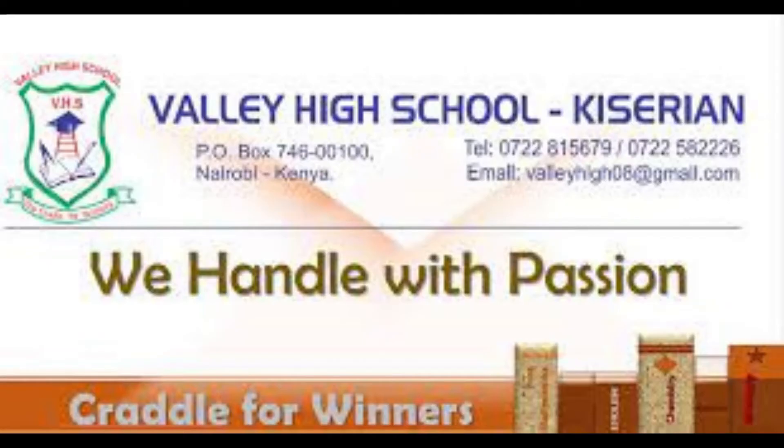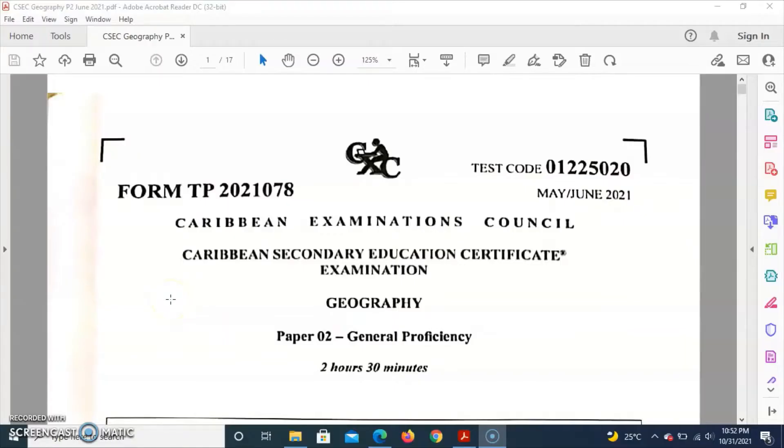Big shout out to Rebecca Mungina who attends Valley High School, a public school located in Kisirian, Rift Valley province, Kenya. Thank you Rebecca for choosing Geography World. For this video we will discuss the answer to question number four on the 2021 May-June CIE Geography Paper 2 examination.